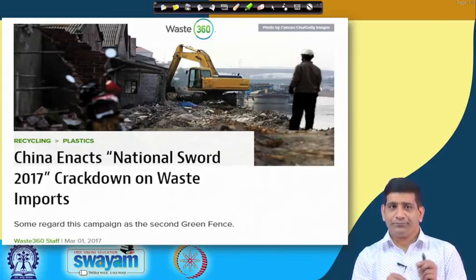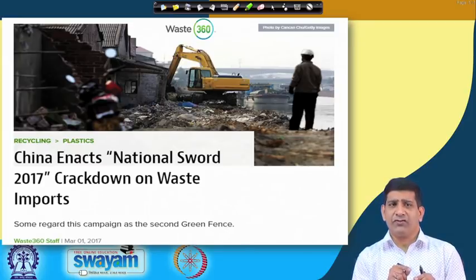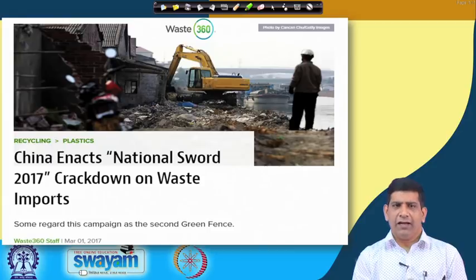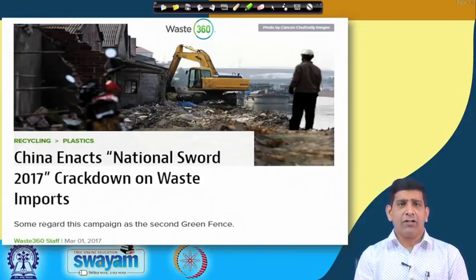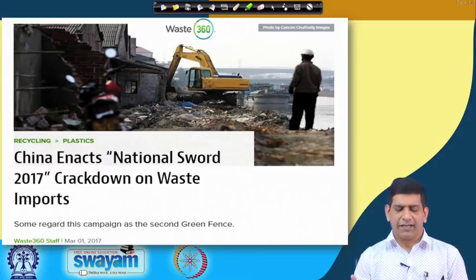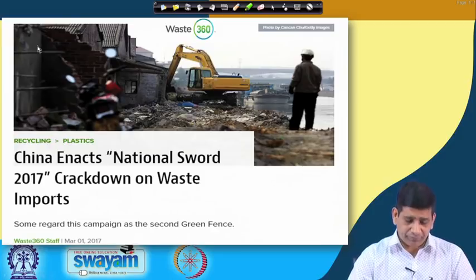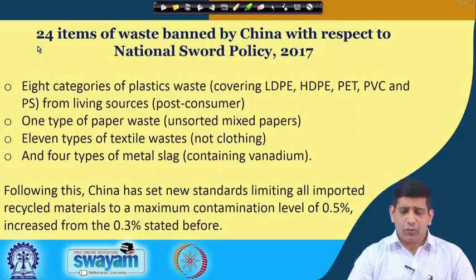The reliance on recyclables from foreign developed countries is gradually going down. China now wants to take recyclables only if they are clean — they will not accept dirty recyclables. If source separation is not proper and there is contamination in the recyclables, they will not take it. This is the whole concept behind the China Sword policy, also called the Second Green Fence.